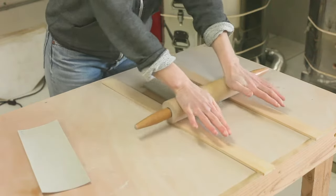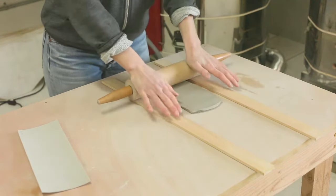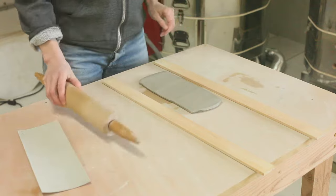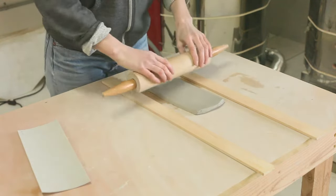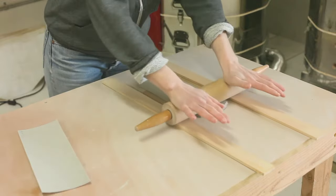I start at the middle and push the clay forward and back incrementally. I flip the clay over to make sure it's not sticking to the table top and to apply the pressure to both sides of the slab.